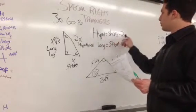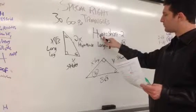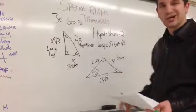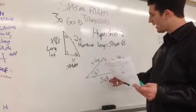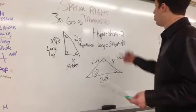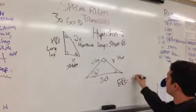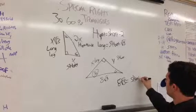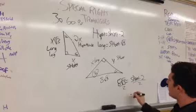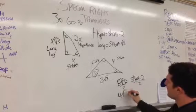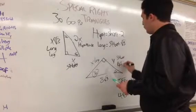So hypotenuse equals short times 2. I have my hypotenuse: 8 square root 3 equals something times 2. So if I'm working backwards, I'm just going to divide. 8 square root 3 divided by 2 gives my short leg. So 8 square root 3 equals short times 2, divide by 2, and I have 4 square root 3 equals my short leg.